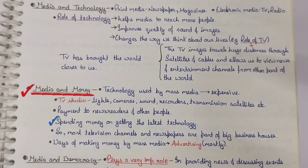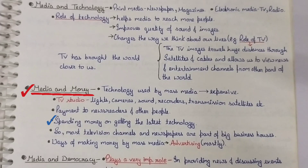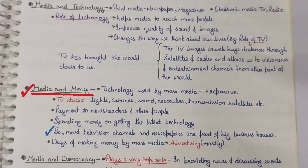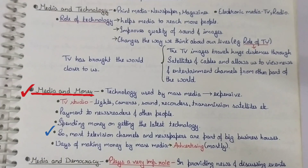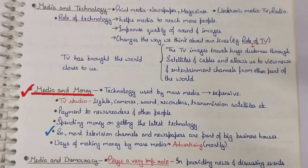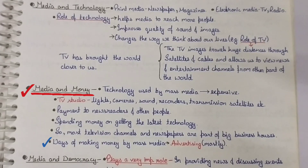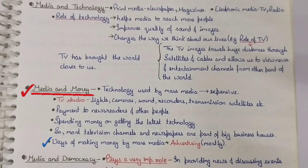Another factor is spending money on getting the latest technology and new machines. Most television channels and newspapers are part of big business houses. These business houses help sponsor TV channels, and in indirect ways, TV channels and newspapers provide advertising opportunities to them for profit. The way mass media earns money is through advertisements — advertisement is the main way for mass media to earn money.